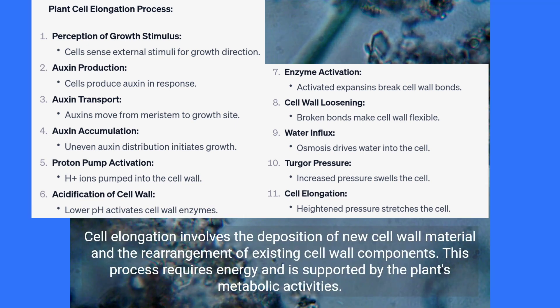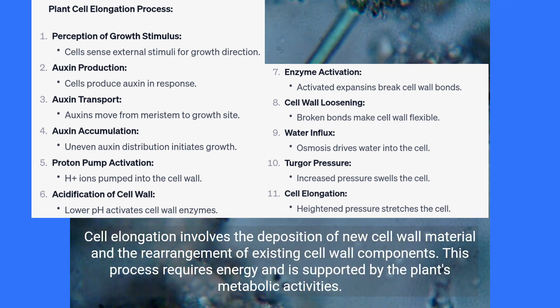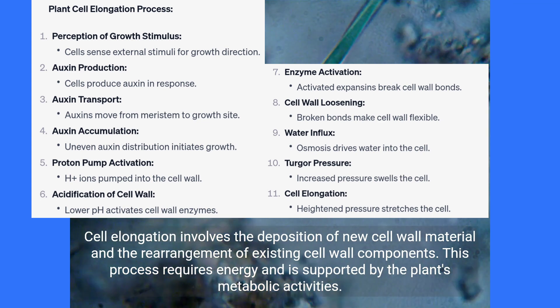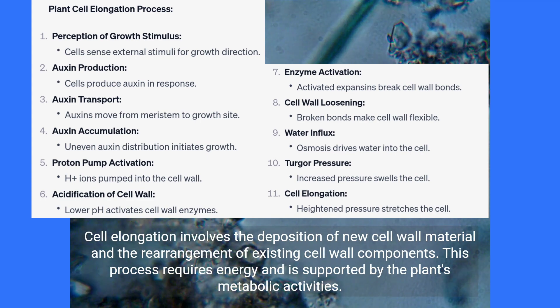Cell elongation involves the deposition of new cell wall material and the rearrangement of existing cell wall components. This process requires energy and is supported by the plant's metabolic activities.